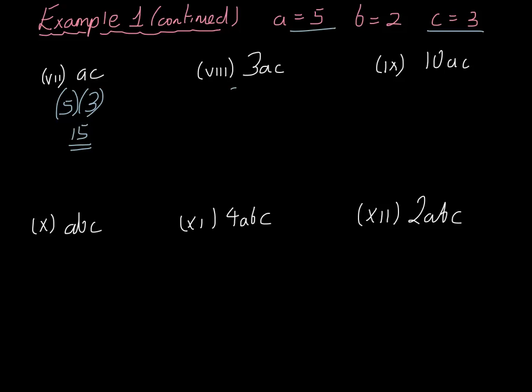3ac would be 3 inside brackets, 5 inside brackets, and another 3 inside brackets. 3 times 5 is 15, times 3 is equal to 45.